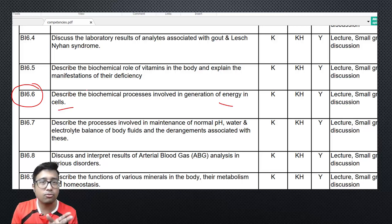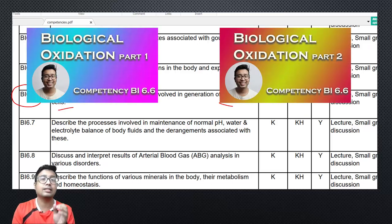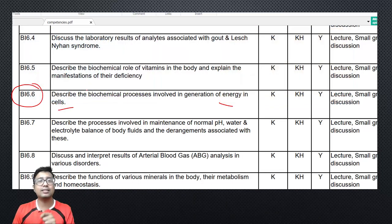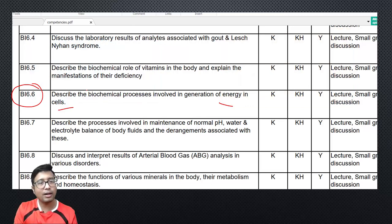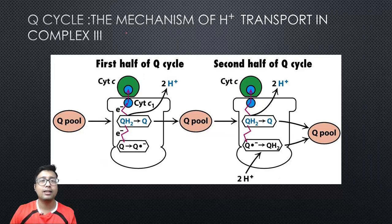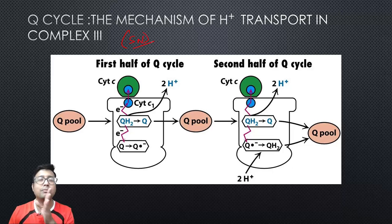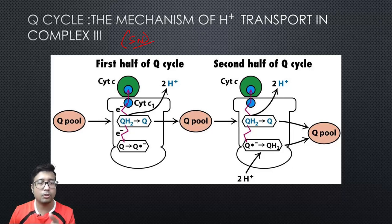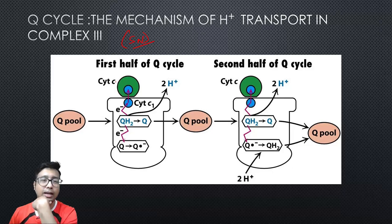If you haven't watched Part 1 and Part 2 of this video, it's a great time to pause, go back and watch — the links are in the description. In Part 3, we will start with the Q cycle, which is a very common short note you will find in exams. The examiner might ask you in viva, but short note is the most common area where it is asked.